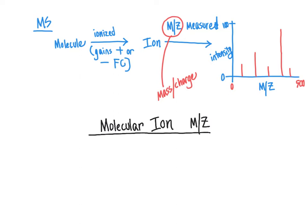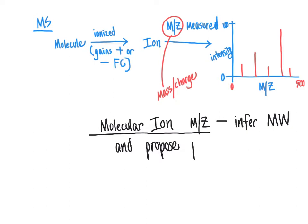The molecular ion mass-to-charge ratio will allow us to infer the molecular weight of the compound and propose a potential molecular formula — for example, allowing us to say this molecule has a formula of C6H12O6. So the main piece of information we get out of a mass spectrum is generally going to be the molecular formula.